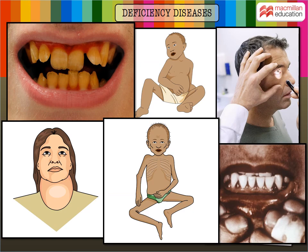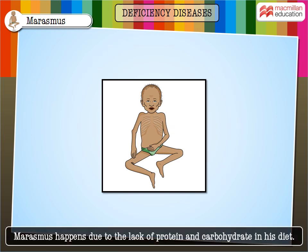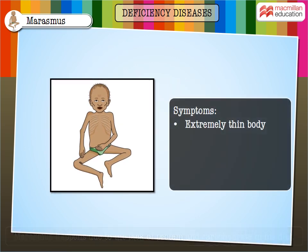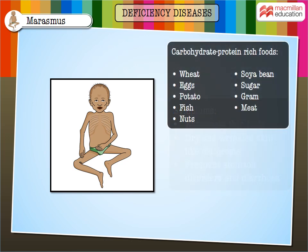What has happened to this child? This condition is called marasmus, and it happened because of the lack of protein and carbohydrate in his diet. Other symptoms include dry and wrinkled skin like old people, and frequent stomach disorders and diarrhea.